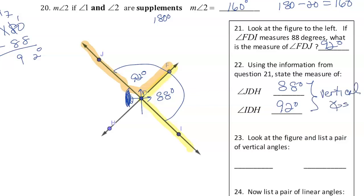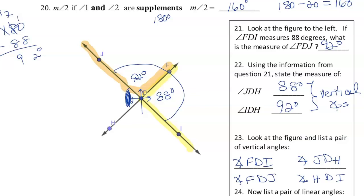List a pair of vertical angles. Angle FDI is vertical to angle JDH, and angle FDJ is vertical to angle HDI. So we have two pairs of vertical angles.